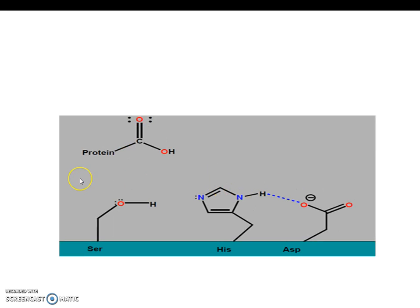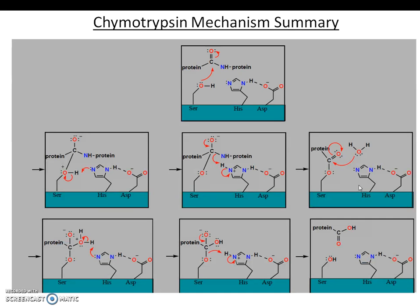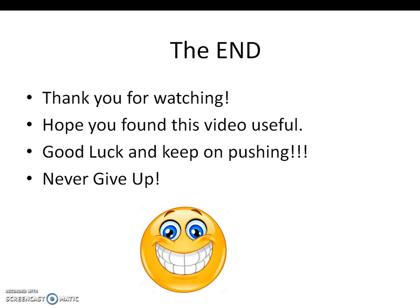At the end of that, the second product is formed. We can see that the catalytic triad is restored for any incoming polypeptides that may come. This is a summary of the chymotrypsin mechanism — a very great summary to look at.